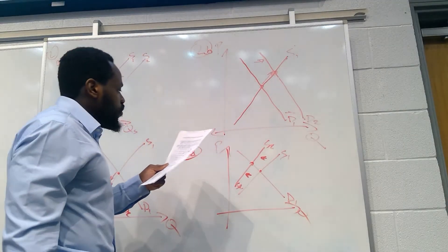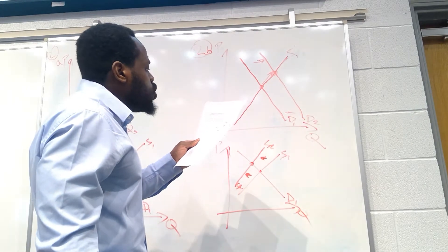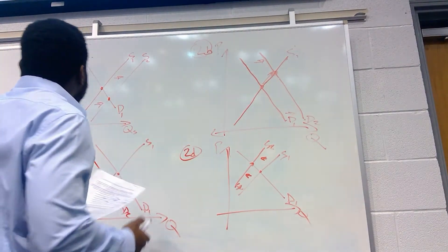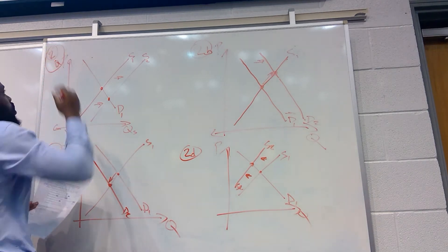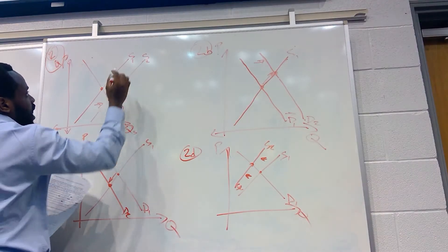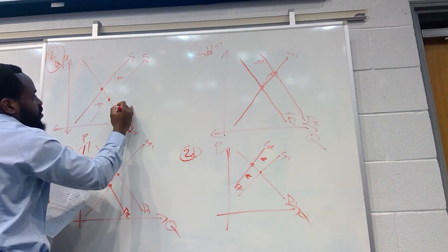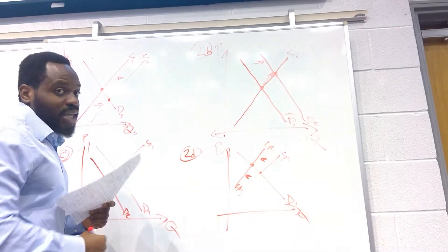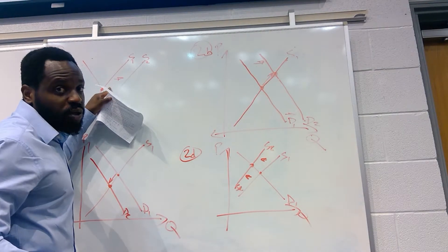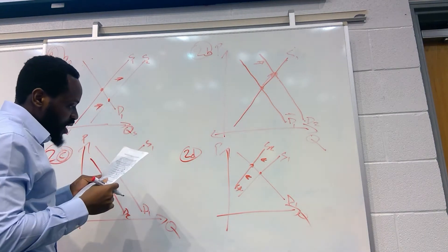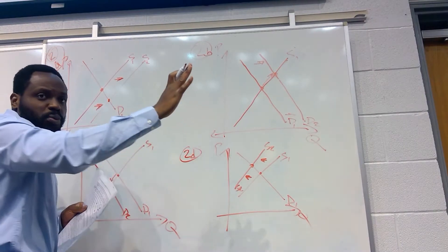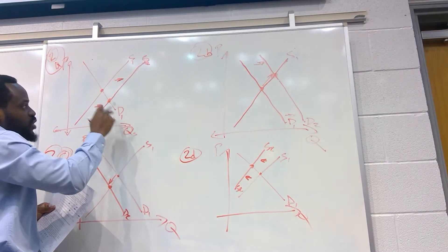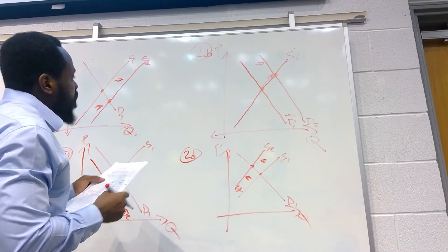Question 2a says new oil fields start up in production. So what happens to the supply curve? Nothing has been said about price — it just says we have new oil fields. That means we have more supply of oil for central heating, so we're going to have a shift in the supply curve to the right. This is our new supply curve S2, and our new equilibrium is where S2 meets the demand curve, at the new equilibrium point E1.